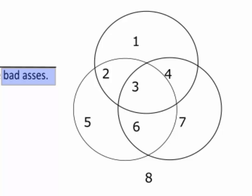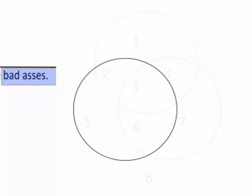So, for one set, we divide the universe into two parts. For two sets, divide it into four parts. And for three, into eight parts.